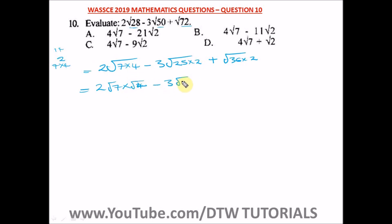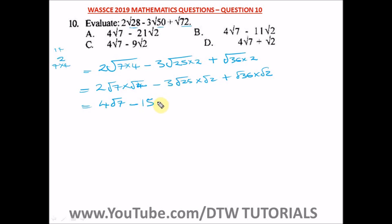Let me break this down explicitly: we have minus 3 times √25 times √2, plus √36 times √2. The square root of 4 is 2, and 2 times 2 gives us 4, so we have 4√7. The square root of 25 is 5, and 5 times 3 gives 15, so we have minus 15√2. The square root of 36 is 6, giving us 6√2.